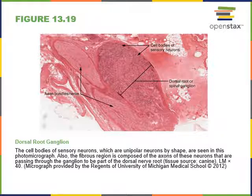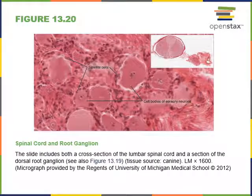A micrograph of the dorsal root ganglion shows numerous cell bodies of sensory neurons inside it, with axons traveling from the dorsal root to the ganglion. Axons from the ventral root join with the dorsal root to form the trunk of a spinal nerve. At higher magnification, the pseudounipolar sensory neuron cell bodies are surrounded by neuroglial satellite cells that regulate the chemical environment of the neuron.